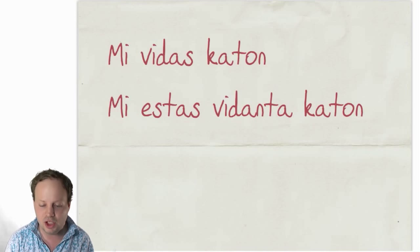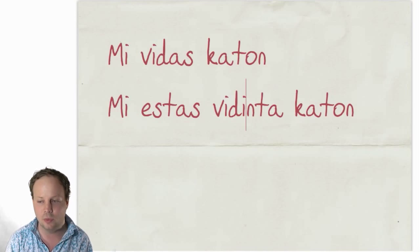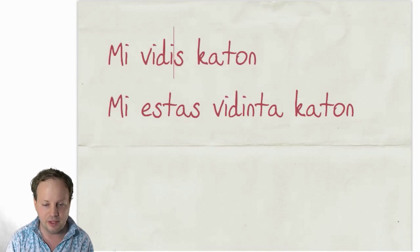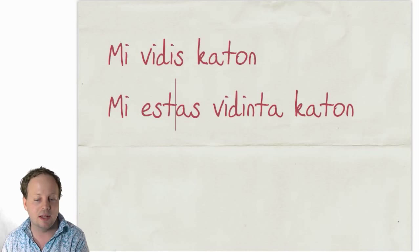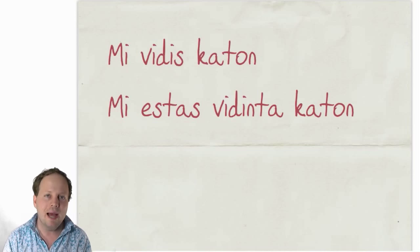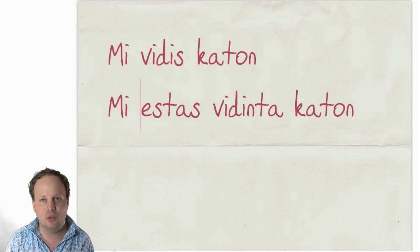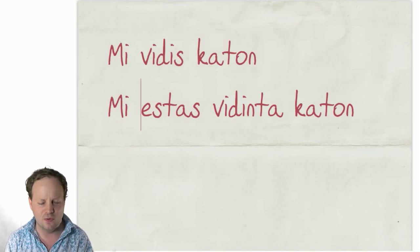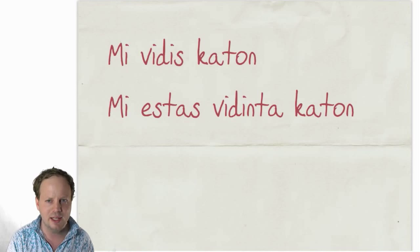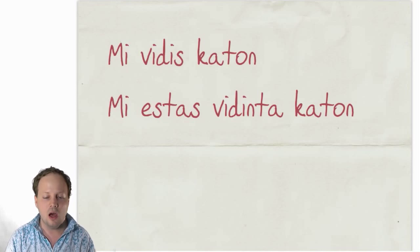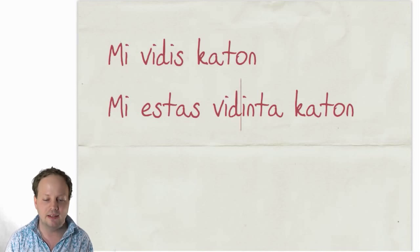You can also change this to past tense. So MI ESTAS VIDINTA KATON means 'I have seen a cat.' This is where English is a bit complex because normally you'd change the verb form itself — 'I saw a cat' or 'I had seen a cat.' So in Esperanto, MI ESTAS VIDINTA KATON means 'I have seen a cat.'